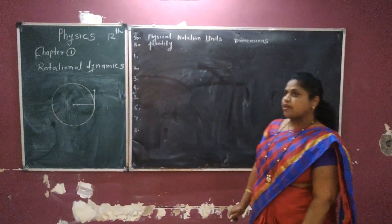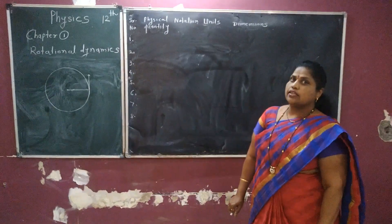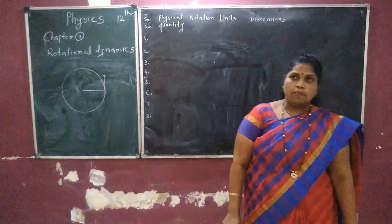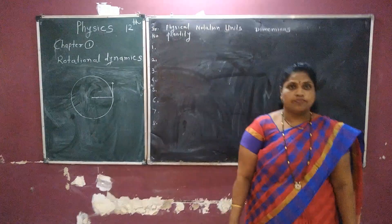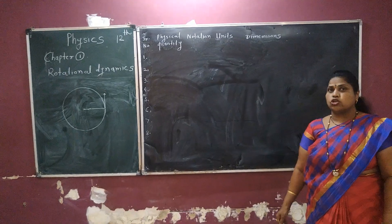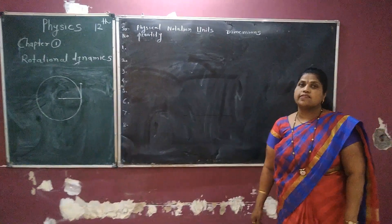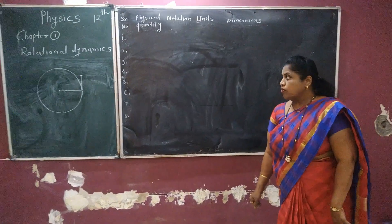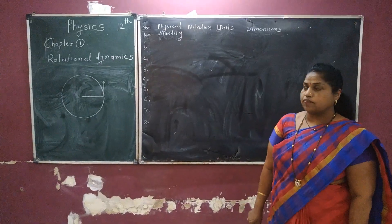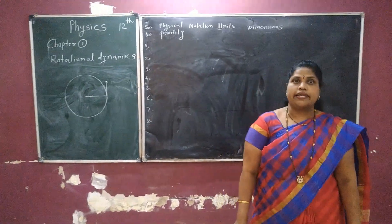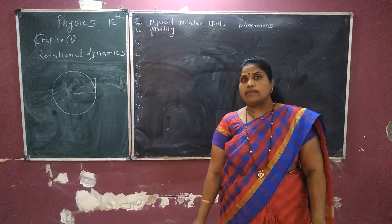Rotational dynamics will be the same. In this chapter, we will study rotational and circular motion. Linear motion is the motion of a particle along a straight line. But we will study in this chapter rotational and circular motion. Circular motion means the motion of a particle along the circumference of a circle. It is called circular motion.